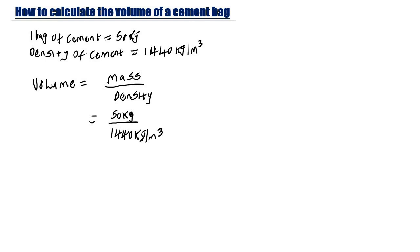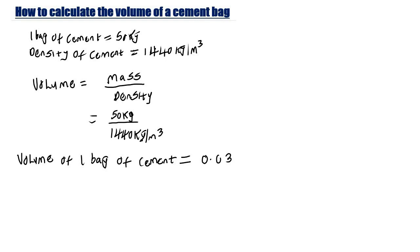If you calculate this, you are going to get the volume of one bag of cement equal to 0.0345 meter cube, because the kg units cancel out, leaving you with 0.0345 meter cube.